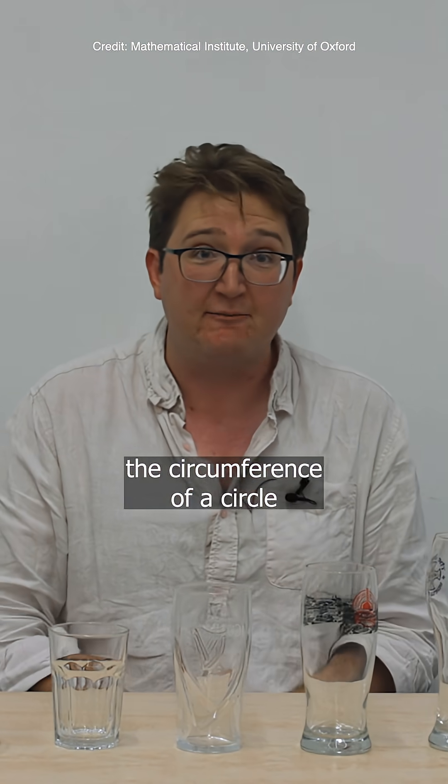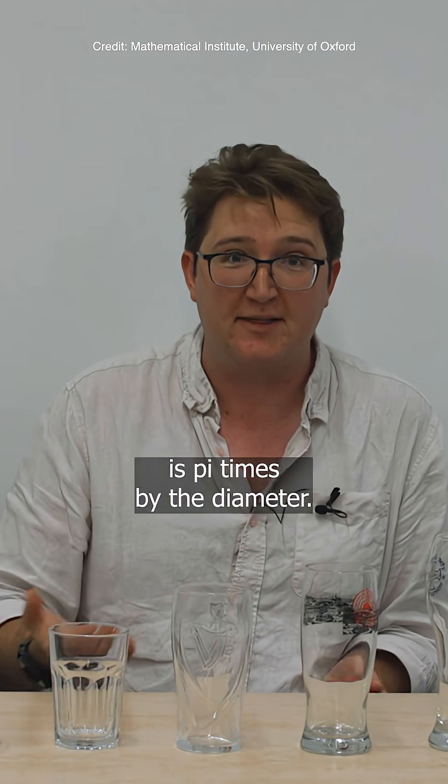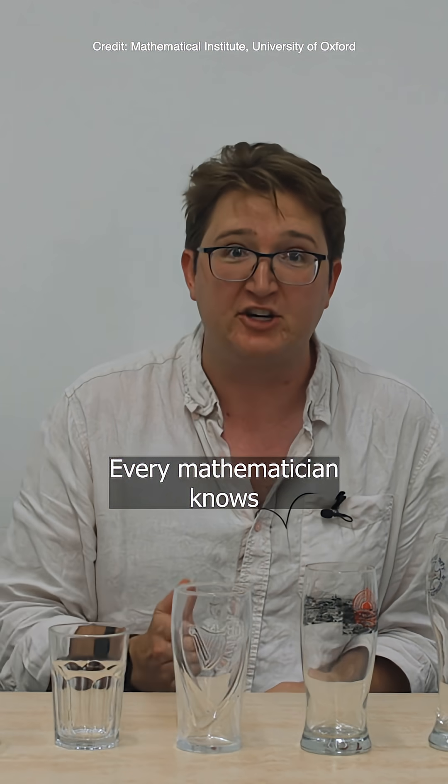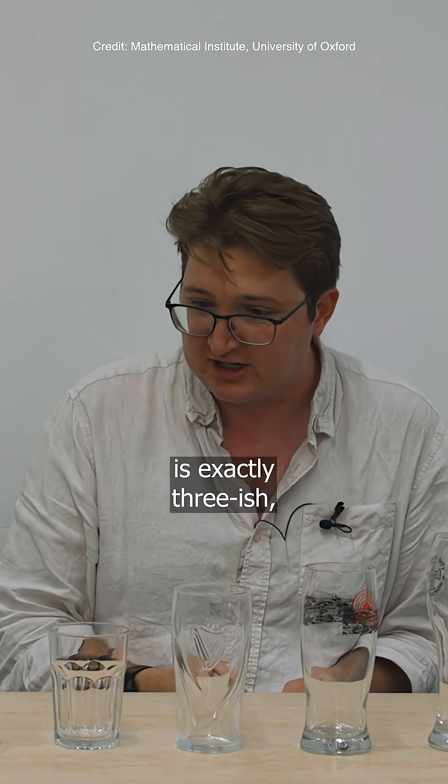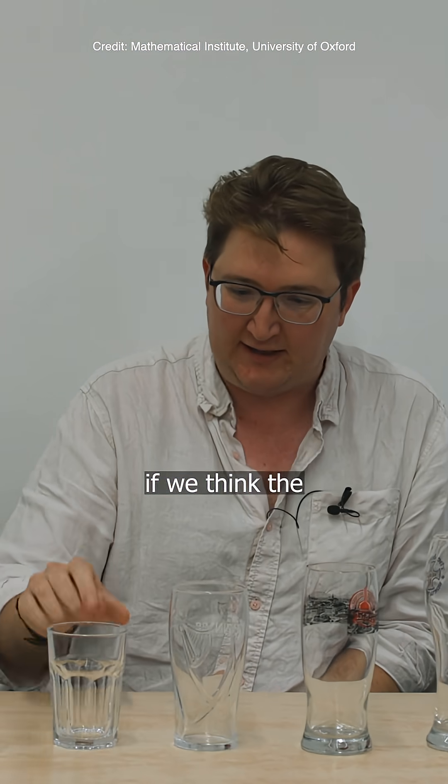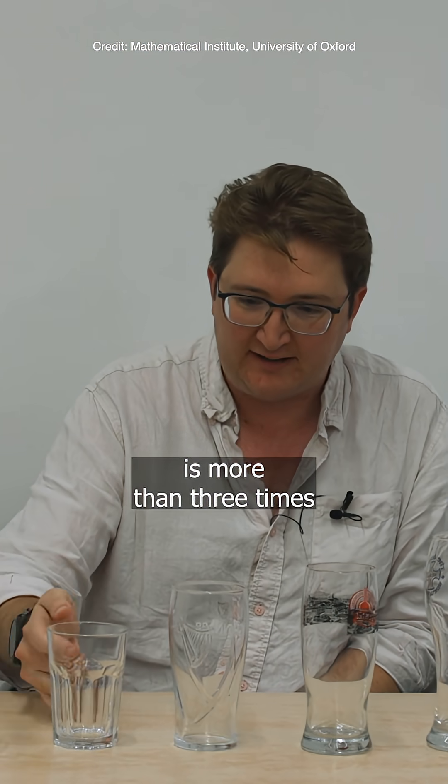So we know that the circumference of a circle is pi times the diameter. Every mathematician knows that pi is exactly three-ish. And therefore, if we think the height of one of these glasses is more than three times the diameter, then we've got our answer.